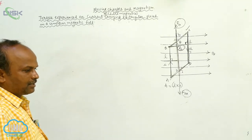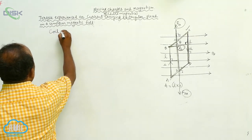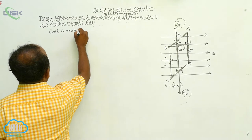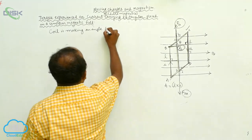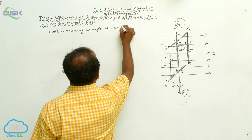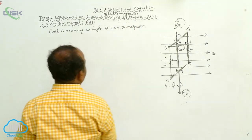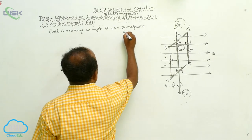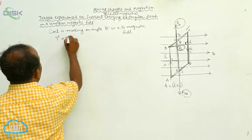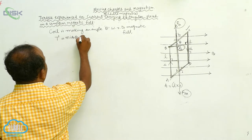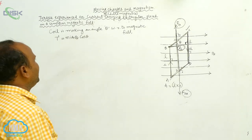If the coil is making an angle theta with respect to the magnetic field, then what is the torque? Torque is equal to NIAB cos theta.